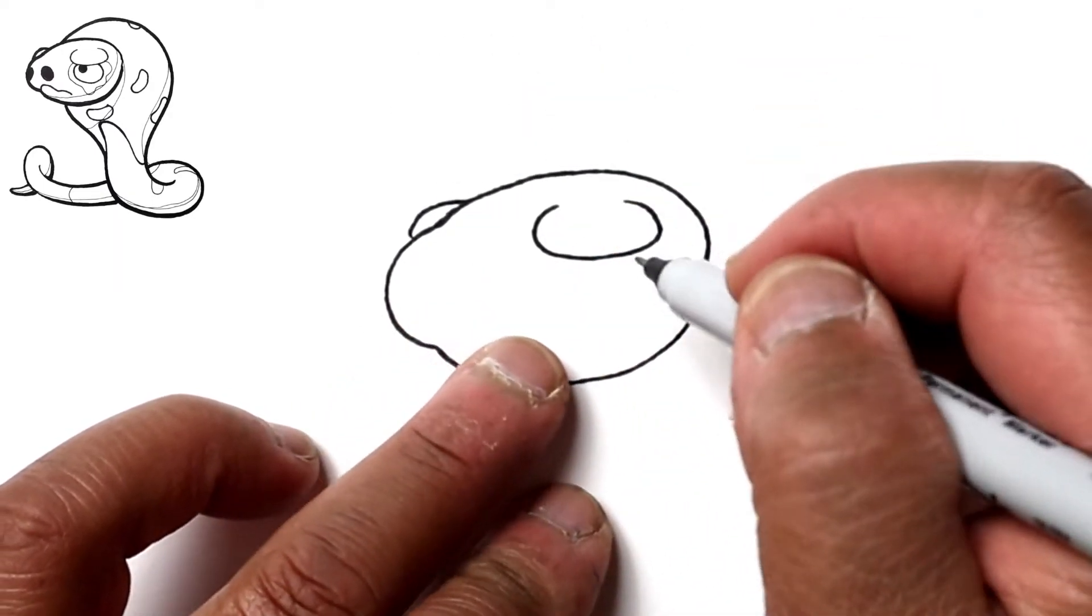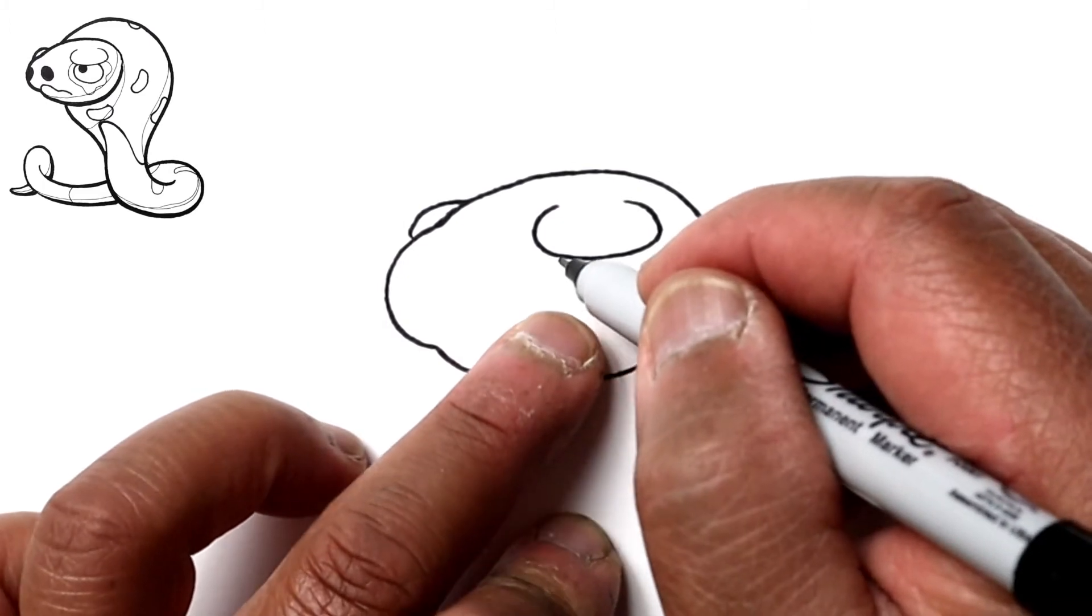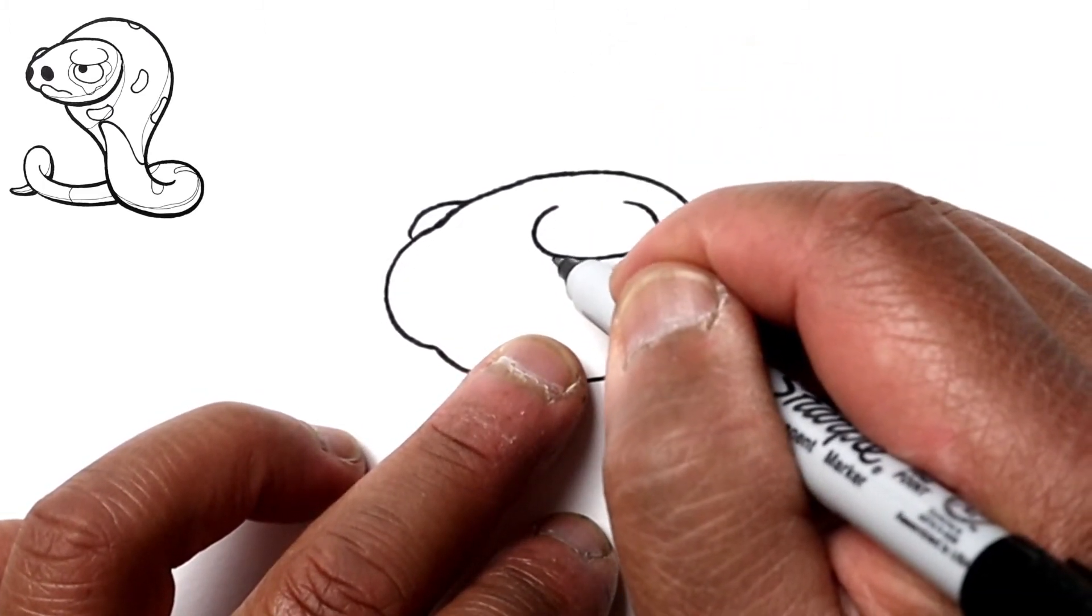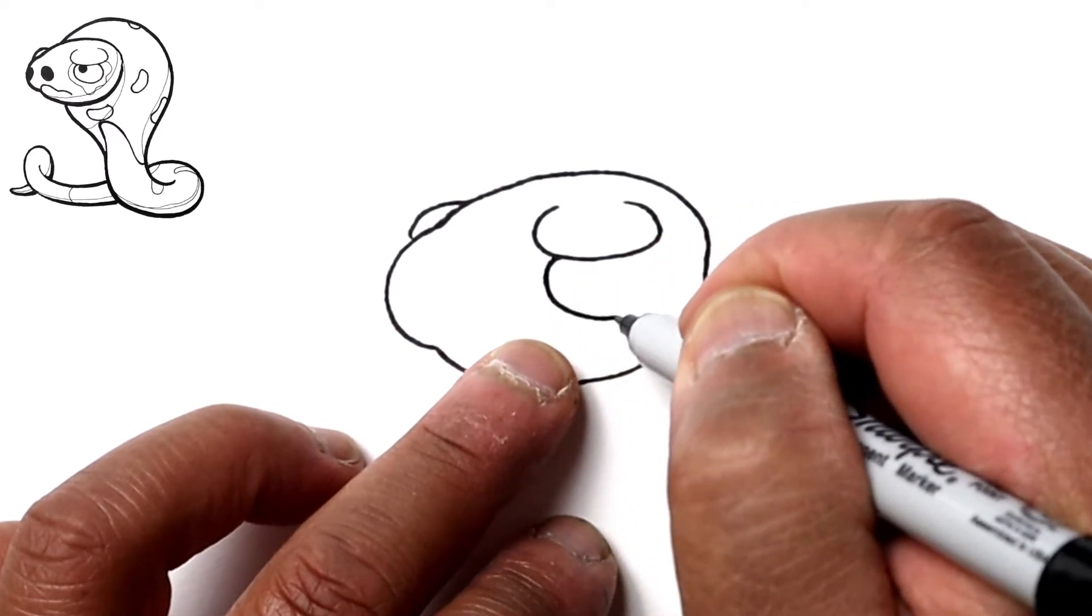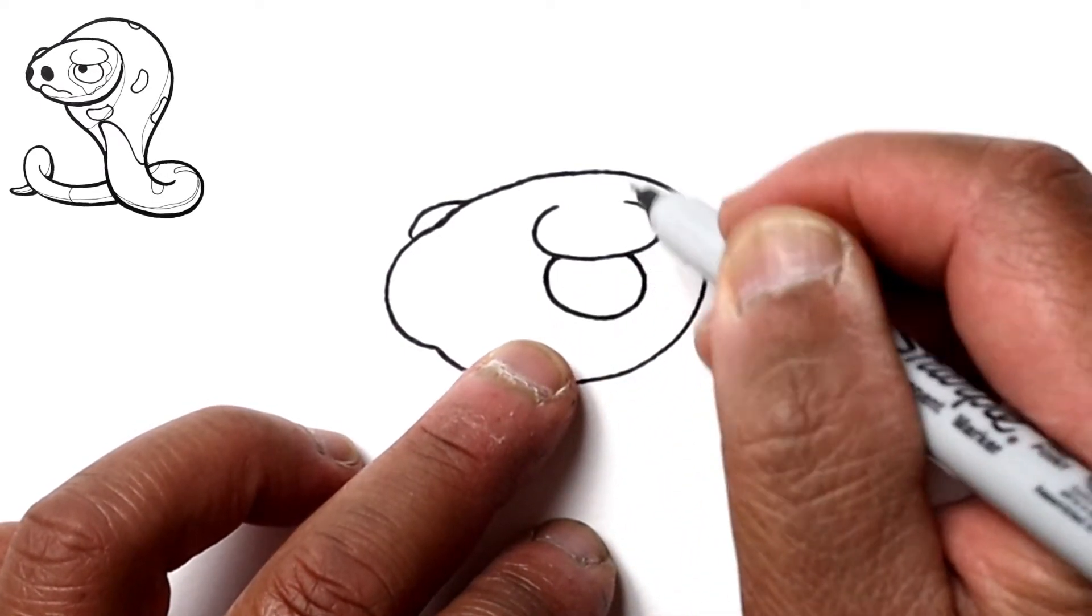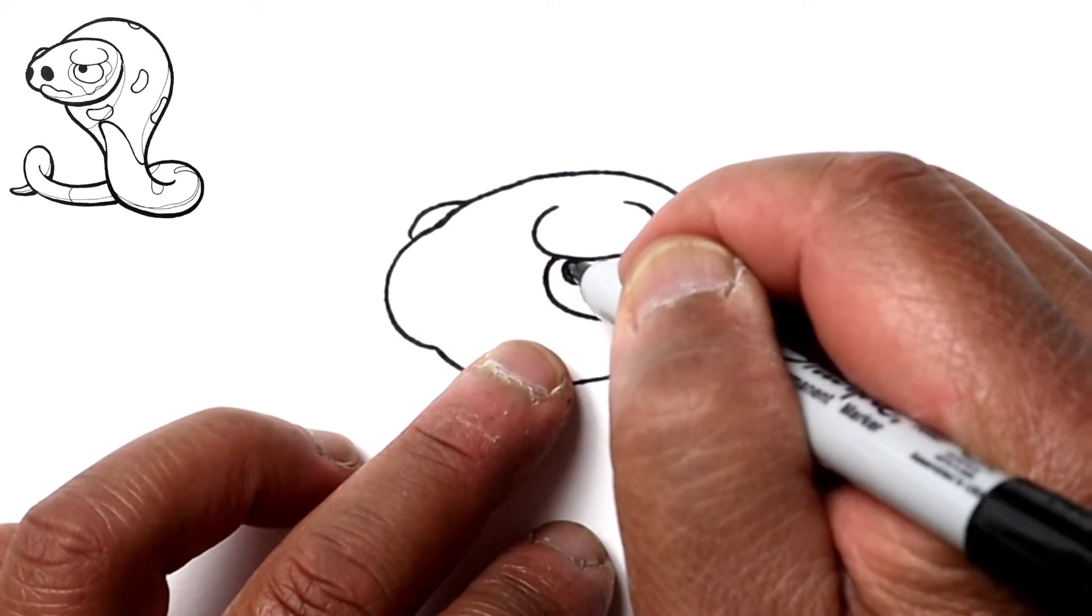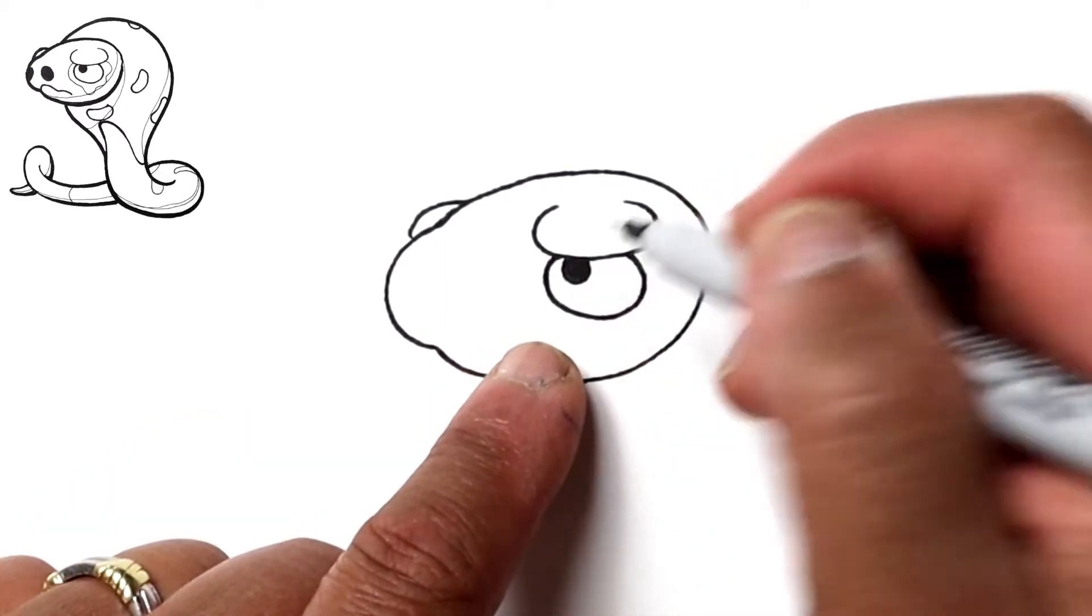Underneath the protuberance is the eye, which is an oval. We'll draw a partial oval here as well underneath, and then the pupil will be right here. You could leave a highlight there if you'd like.